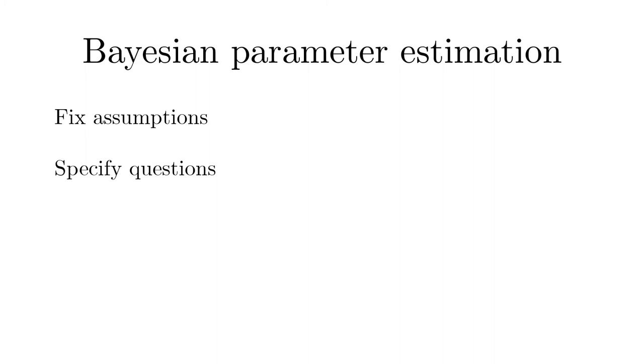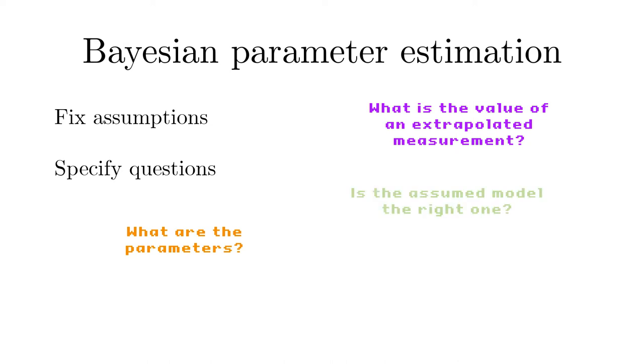Then we have to specify the questions we are interested in, like what are the values of the parameters? What would be the value of the measured quantity at a new pivot point? Is the assumed model the right one? What if there are outliers, which means individual data points that are corrupted by external influences and do not obey the assumed error statistics?